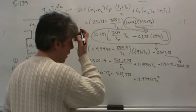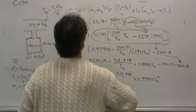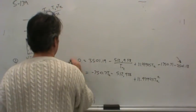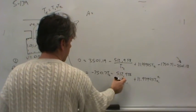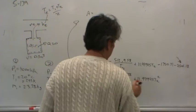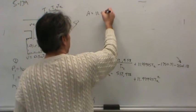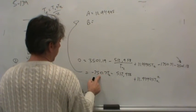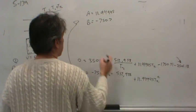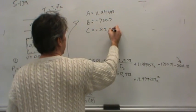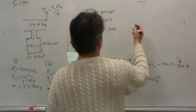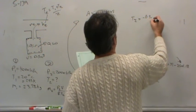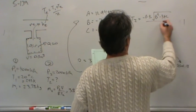Putting it into standard form, you would recognize that A, for the quadratic equation, A would be the multiplier on the squared term, 11.94945. B would be equal to the coefficient for the first order term, negative 750.7. And C would just be the constant term, negative 512958. And, of course, the quadratic formula would say that T2, then, is equal to negative B plus or minus B squared minus 4AC over 2A.